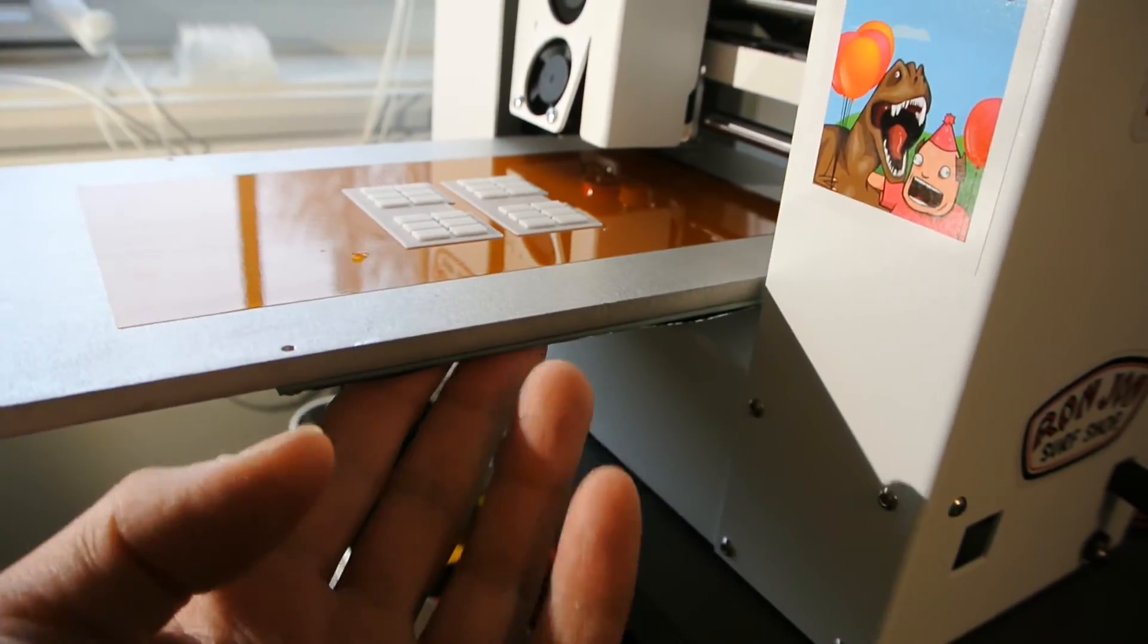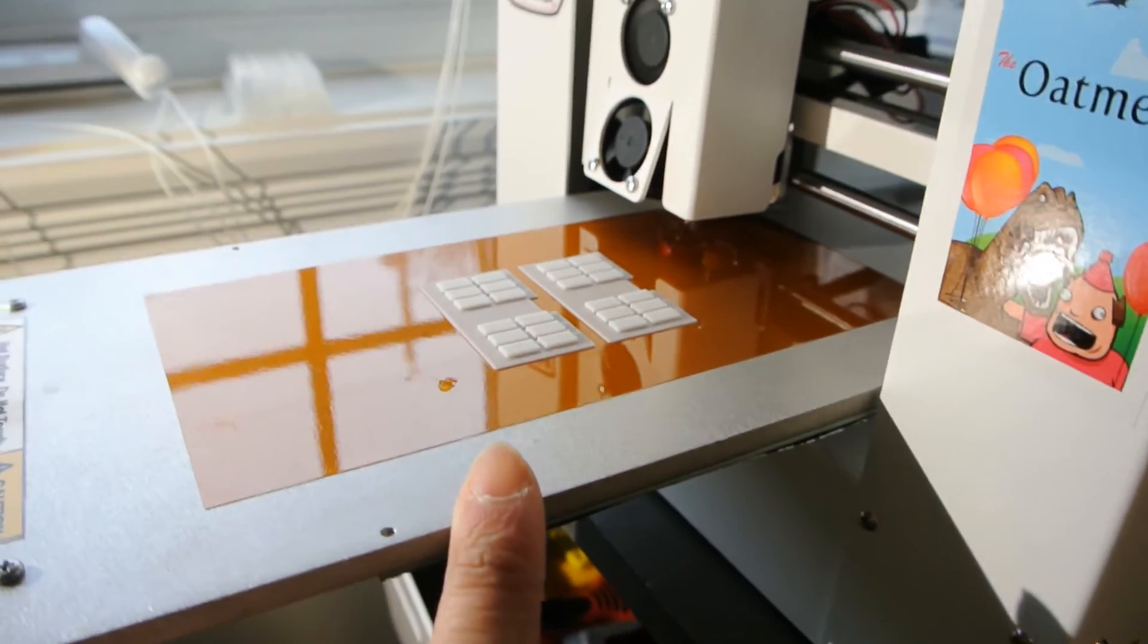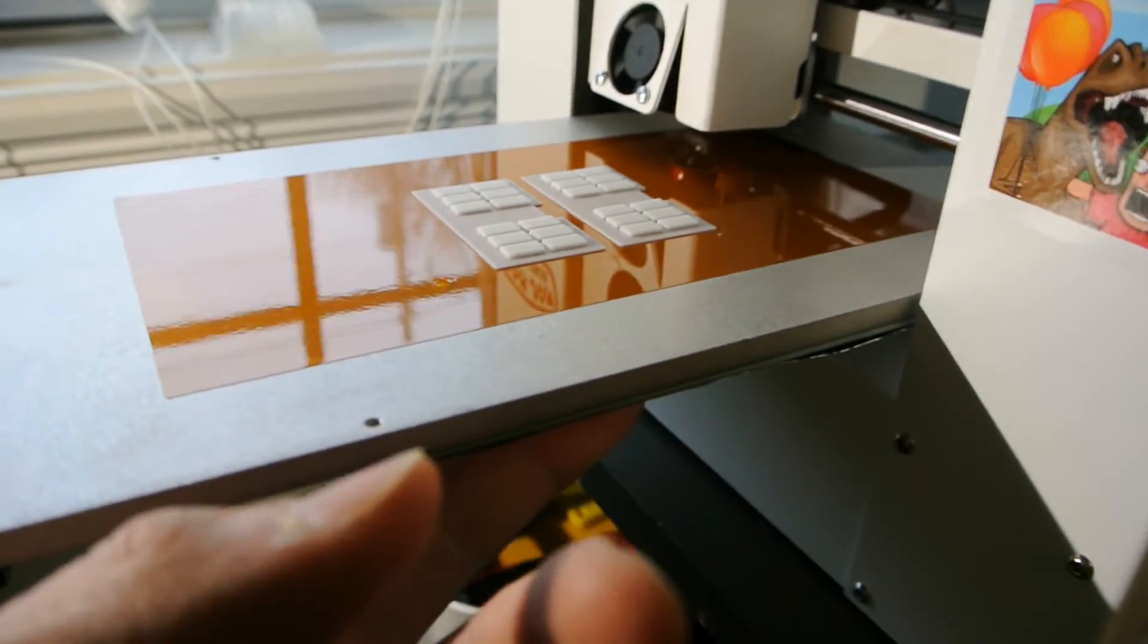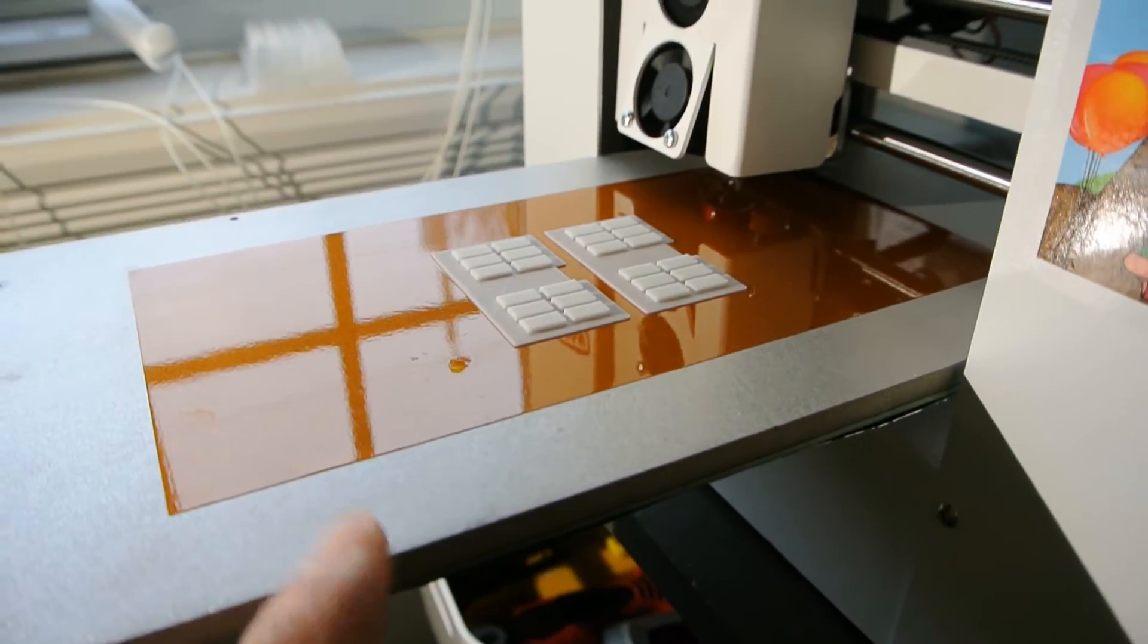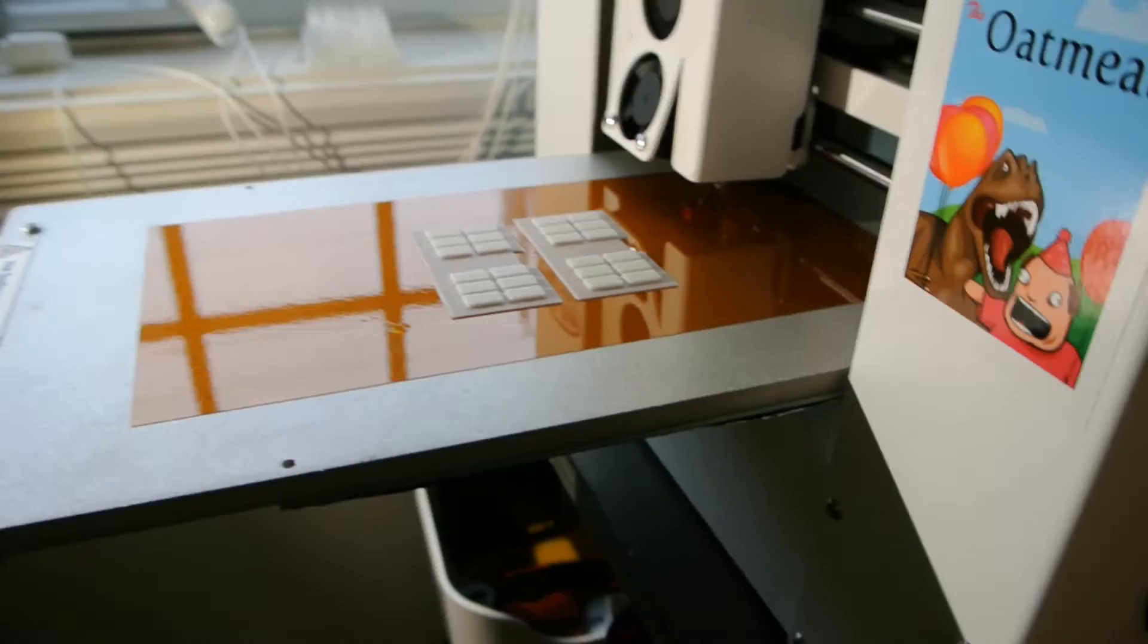So then this heated bed is bolted onto this plate. If you only got the heated print bed, it just bolts onto your old print bed, your smaller print bed.